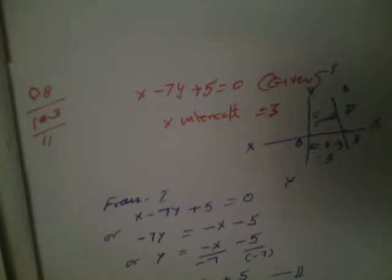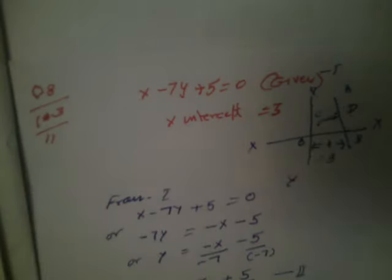So in this case, what is given? x-7y+5 is equal to 0, and having x-intercept of 3. So let it be equation AB. B is touching the x-axis which is 3 units from the origin O, and we have to find the equation of the other line CD which is perpendicular to AB.